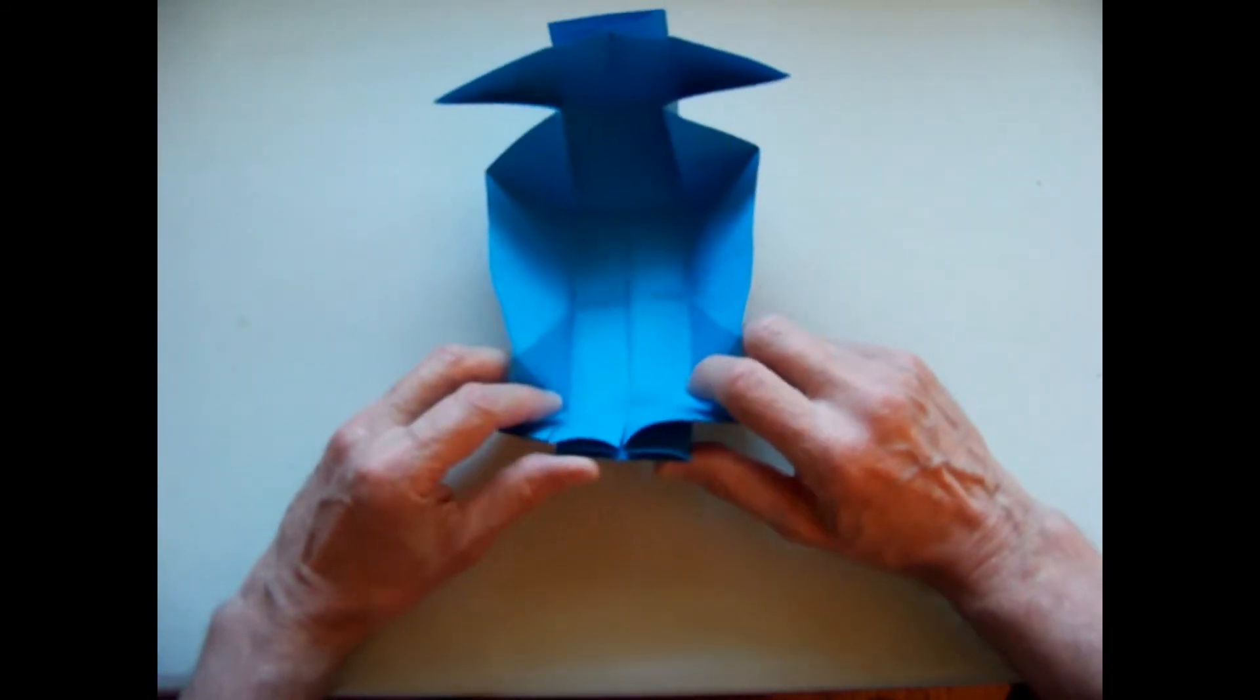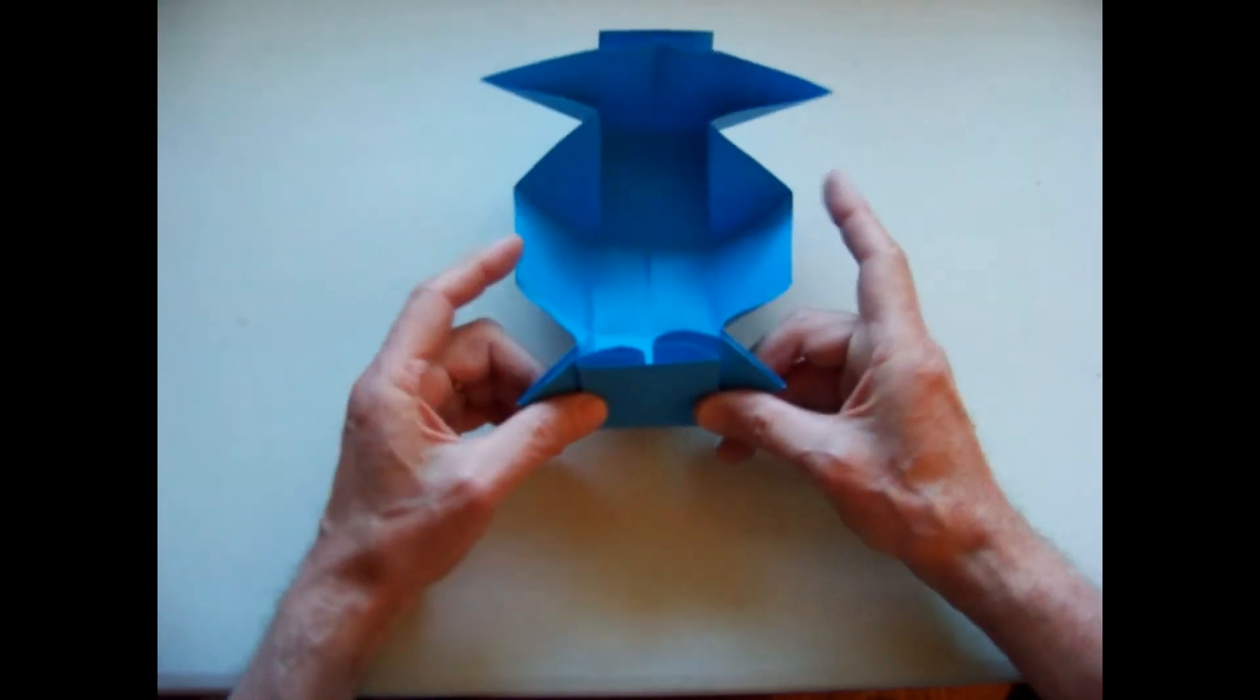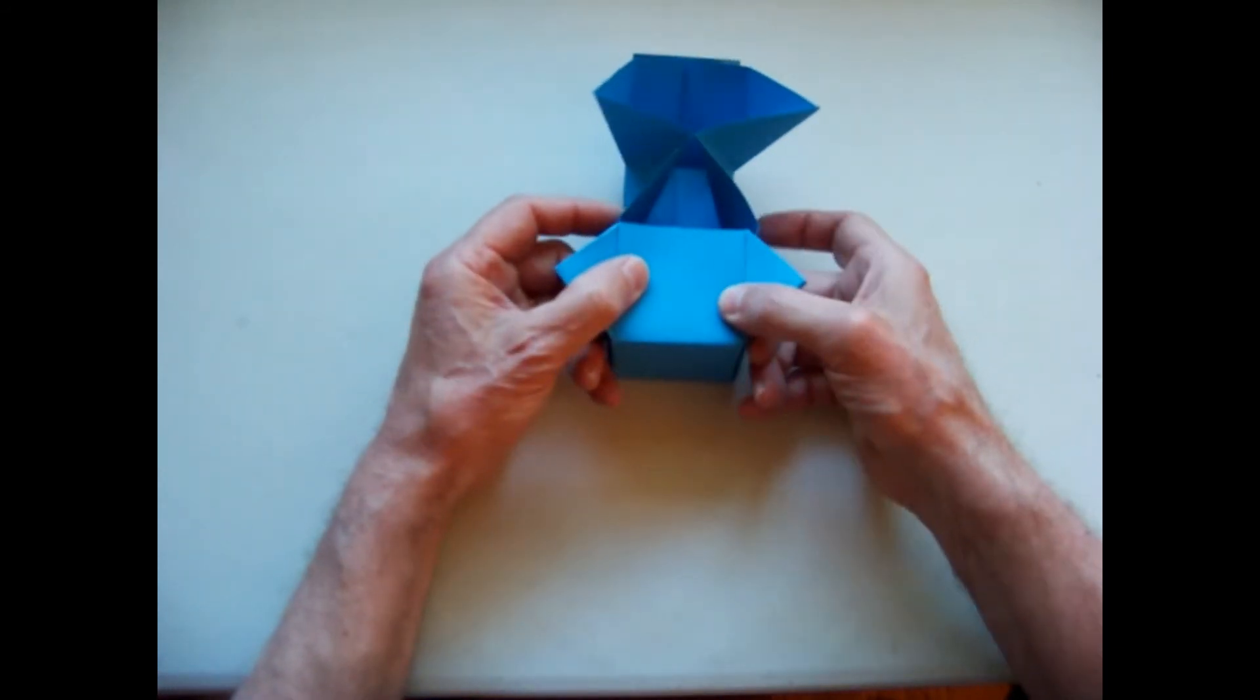We repeat the process on the bottom. Notice that here we have the flap folded in and the wings are smaller. But the process is similar, bringing the small wings up.